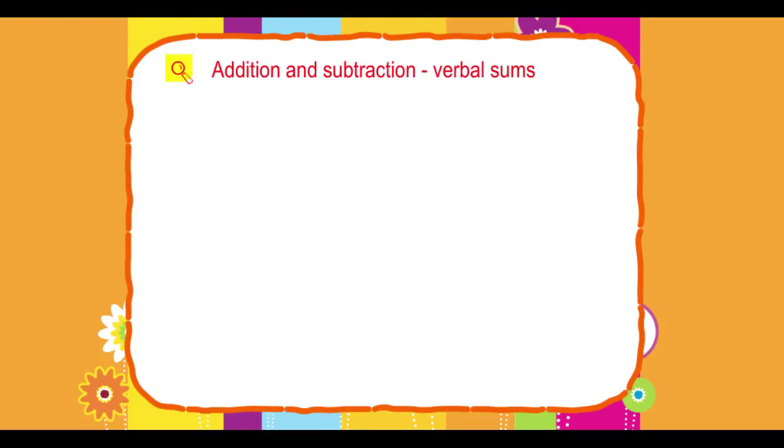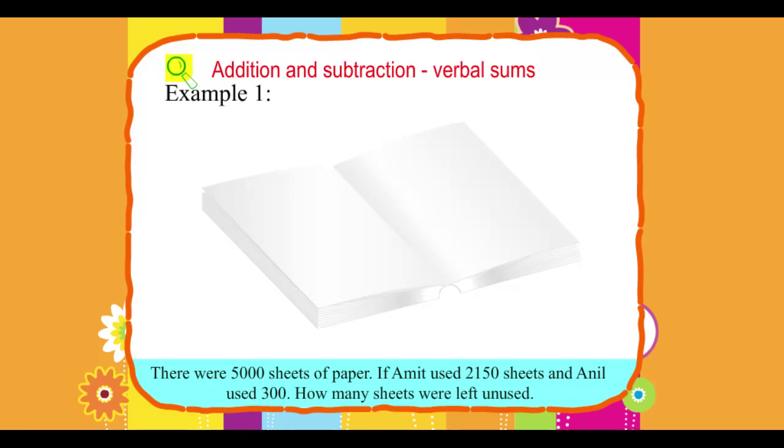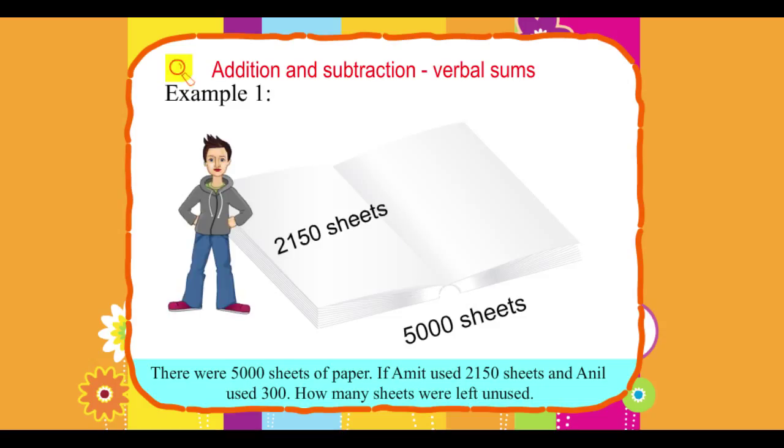Addition and Subtraction Verbal Sums. Example 1: There were 5000 sheets of paper. If Amit used 2150 sheets and Anil used 300, how many sheets were left unused?